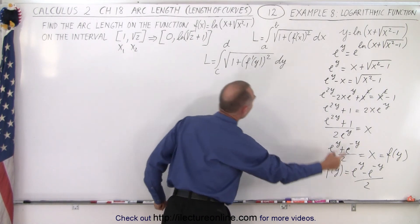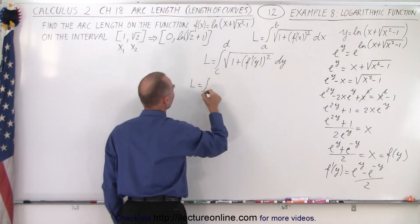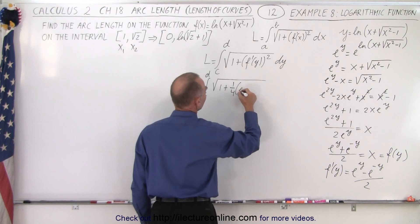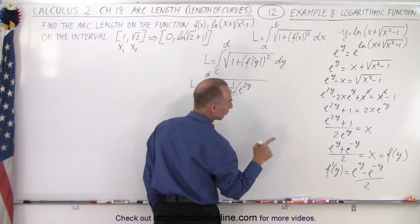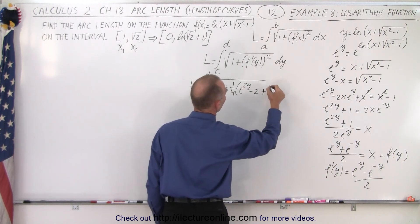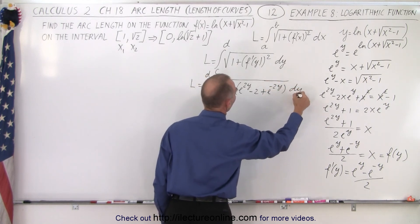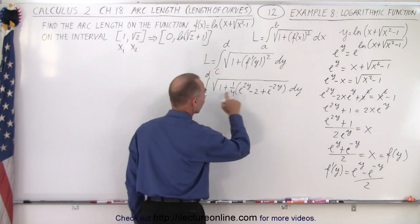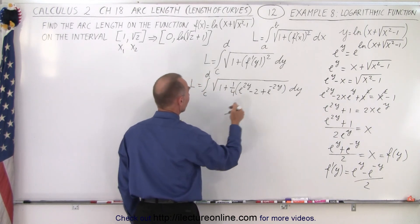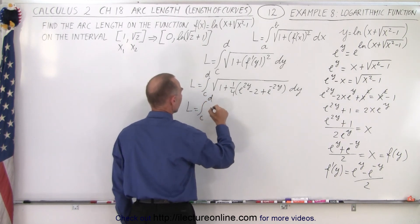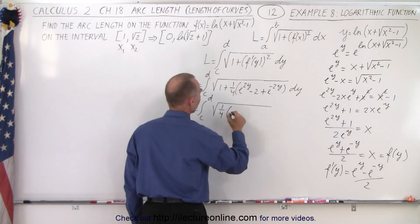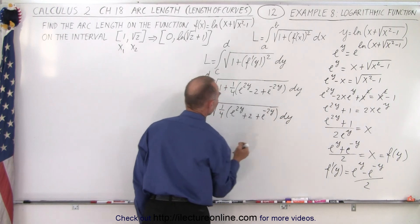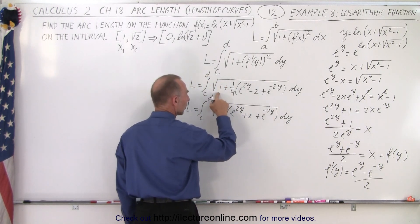Now we take f′(y), square it, and plug it in. So L equals the integral from c to d of the square root of 1 plus — when we square that we get one quarter times e to the 2y minus 2 plus e to the negative 2y — times dy. We recognize the trick from the previous video. Adding the 1: a quarter times negative 2 plus 1 gives plus one half. So we can write L as the integral from c to d of the square root of one quarter times e to the 2y plus 2 plus e to the negative 2y, times dy.